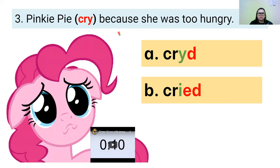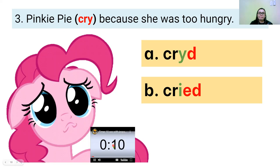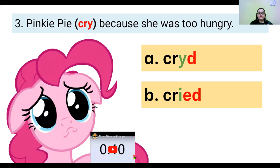Next. Pinkie Pie cried because she was so hungry. Can you read on your own now? Go. Very good. Write your answer, A or B. The correct answer is B because cry ends with Y. So we change Y to I, E, D.